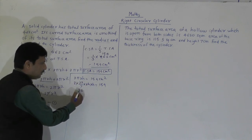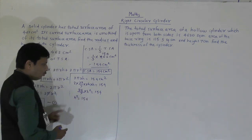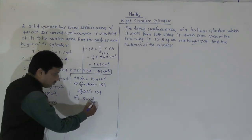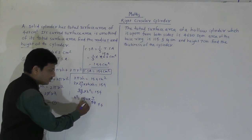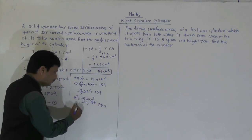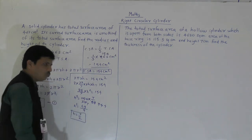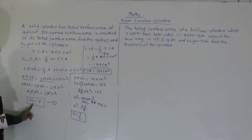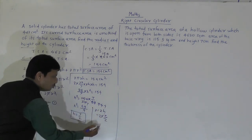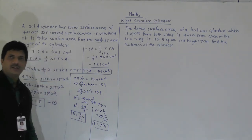So H² equals 154 × (7/88). Simplifying: 154 divided by 88 gives 7/4, so H² = 7/4 × 7 = 49/4. Therefore H equals 7/2 cm. Now with this value we can find the radius. Radius equals 2 × H equals 2 × (7/2). The two cancels, so radius equals 7 cm. And height is 7/2, which we can write as 3.5 cm.